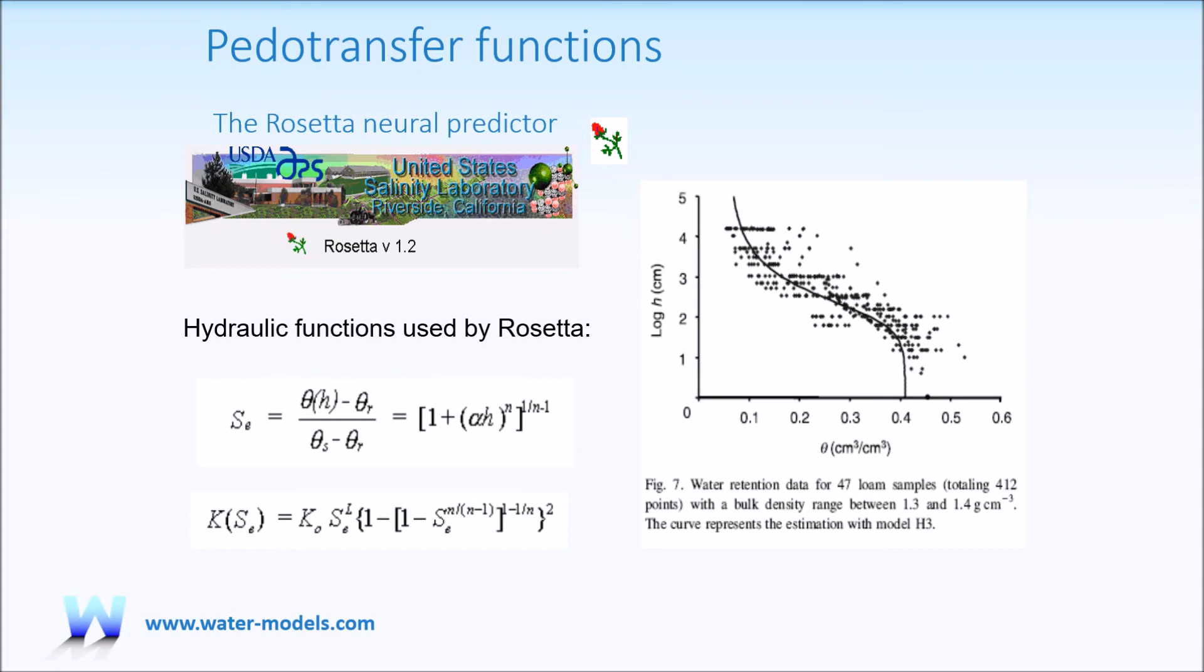The Rosetta Neural Pedotransfer Function is very famous, but also in the European Union, there are pedotransfer functions for European soils.